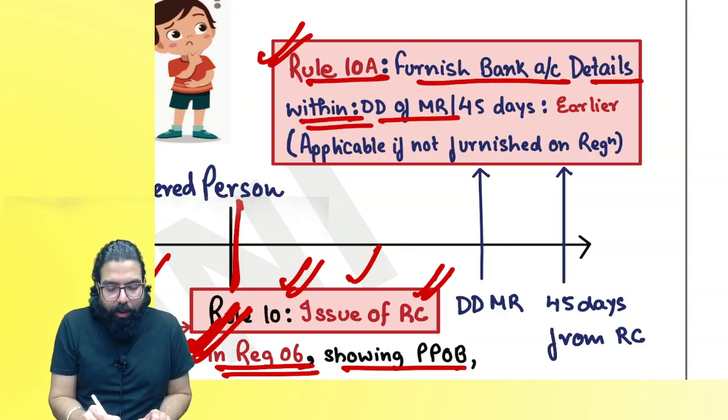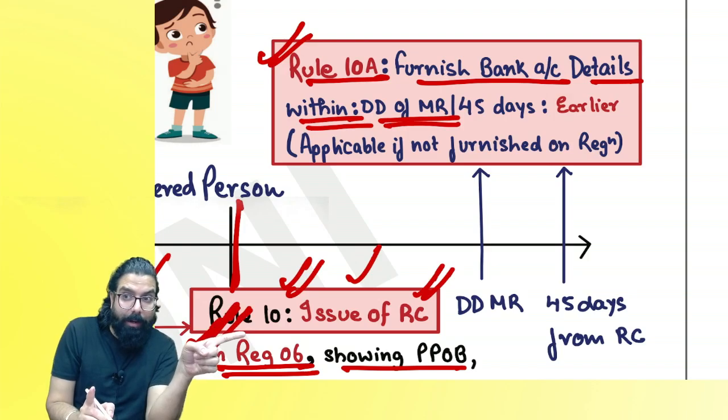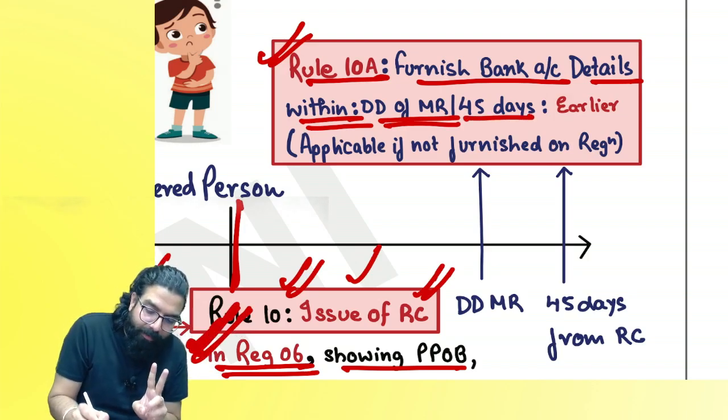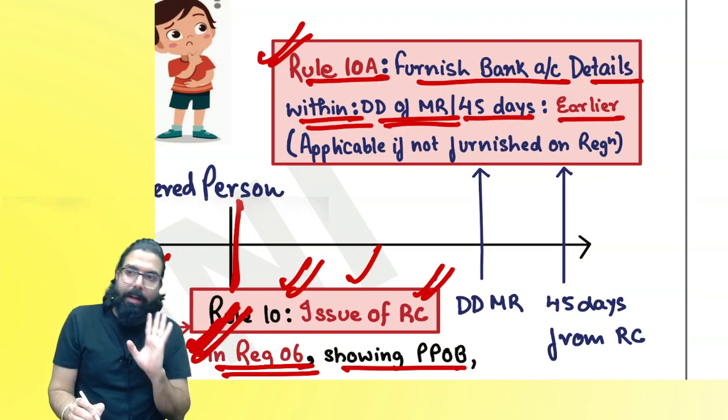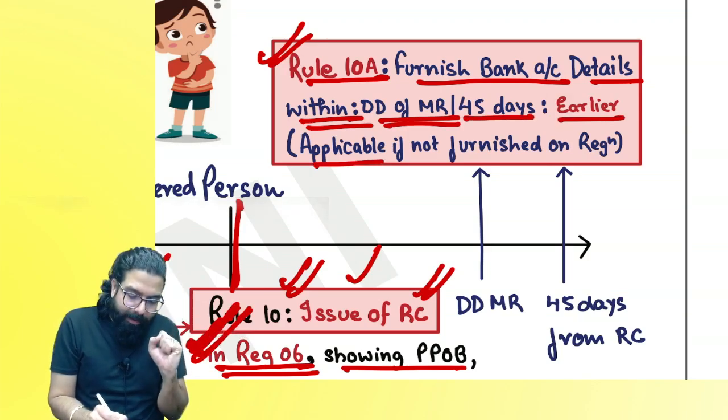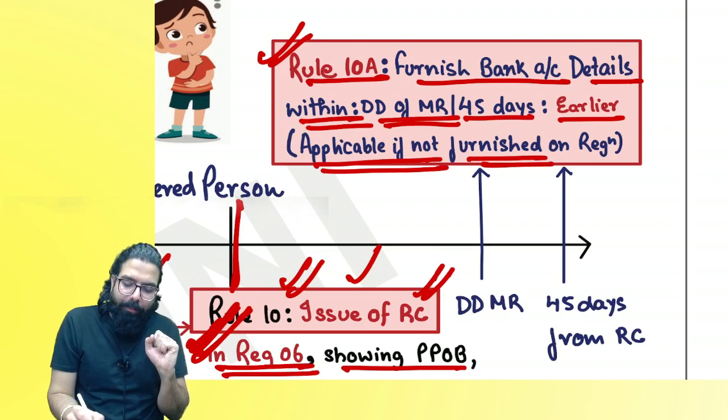Once you are granted a registration certificate, from the date of grant you must go online and furnish your bank account details. Rule 10 requires you to furnish bank account details within the specified time period.